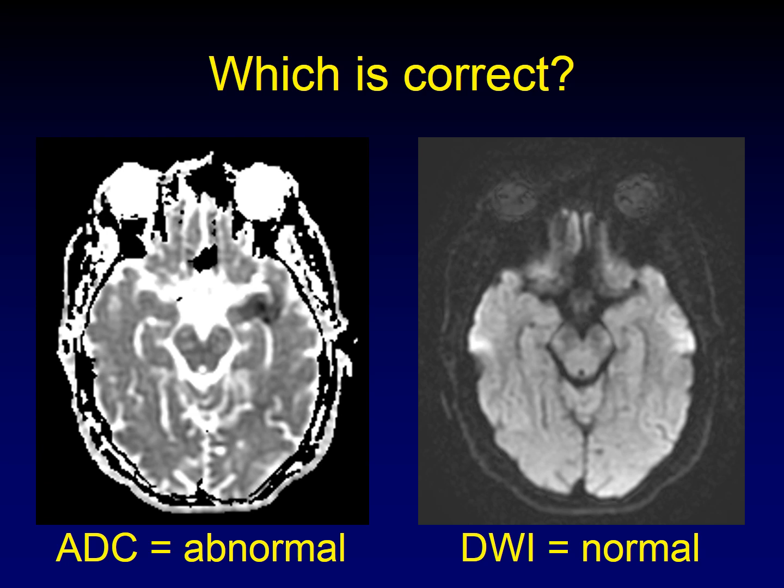I'm sometimes approached by residents who have found an abnormality on an ADC map, but there's no corresponding abnormality on the diffusion-weighted imaging. The question is, is the ADC correct or is the diffusion-weighted imaging correct? So let's go through how these images are created and see if we can track down what you should do when you see an abnormality on ADC that's not present on the DWI.